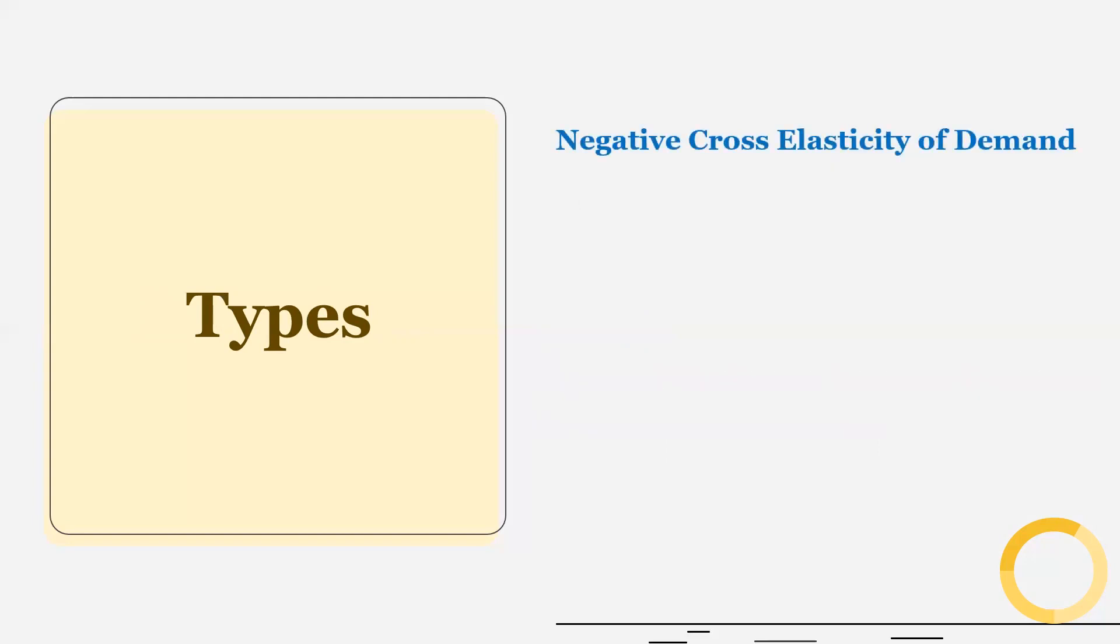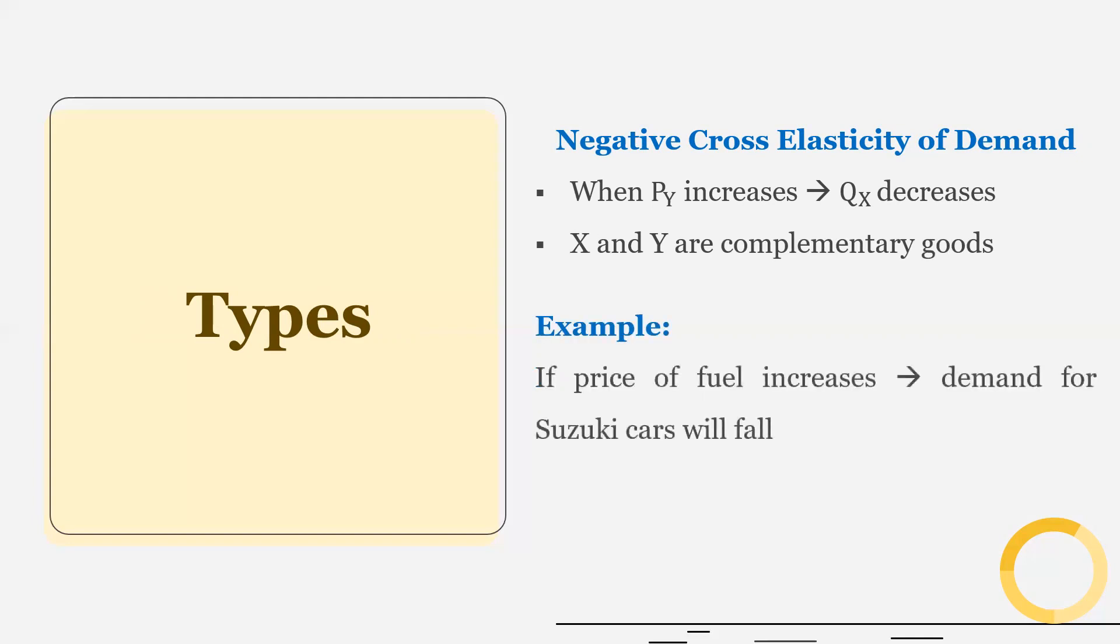Negative cross elasticity of demand. When price of Y increases, the quantity demanded for commodity X decreases. And therefore these two commodities are complementary goods. So if price of fuel increases, demand for Suzuki cars will fall. And here we can see fuel and cars are complementary goods. So for complementary goods, cross elasticity of demand is negative.